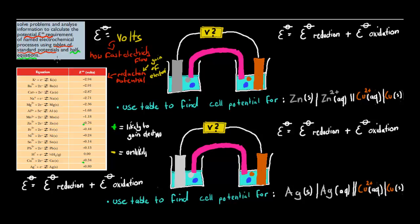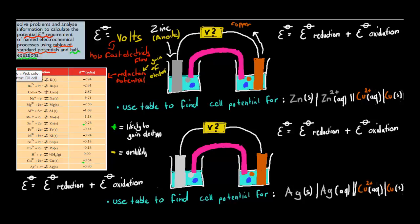I'll start with the calculations you need to do to calculate the cell potential. This formula is generally what I use: cell potential equals your half cell for reduction plus your half cell for oxidation. Before I start, I want to make sure we go over this galvanic cell again. I've got an anode and a cathode. On my anode I've got zinc, and then I've got copper on the other side — copper is my cathode. Remember that oxidation usually occurs at the anode, and reduction usually occurs at the cathode.